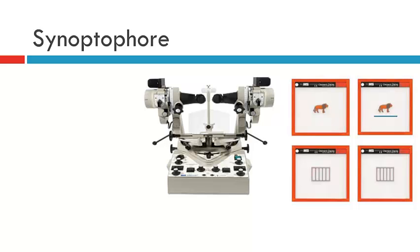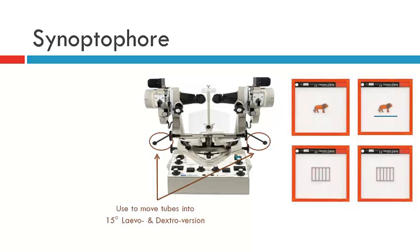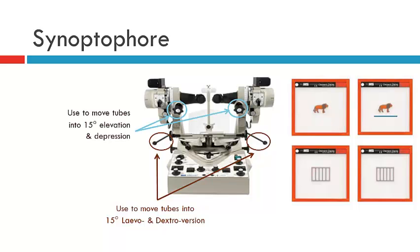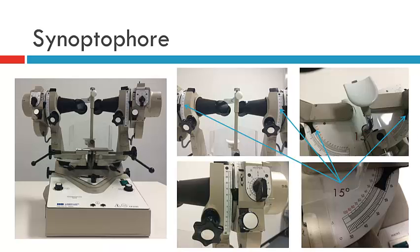Moving on to the synoptophore controls — we have the horizontal levers which move the tubes horizontally. Moving both tubes to the right puts the patient into right gaze; moving both to the left puts them into left gaze. We can also move the tubes up or down using separate levers, and generally we'll move these 15 degrees up or 15 degrees down.